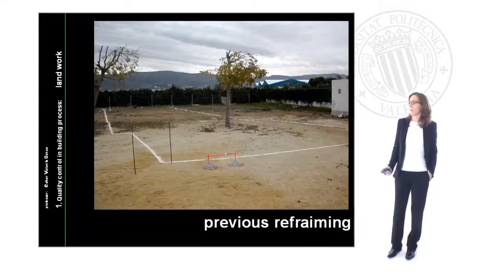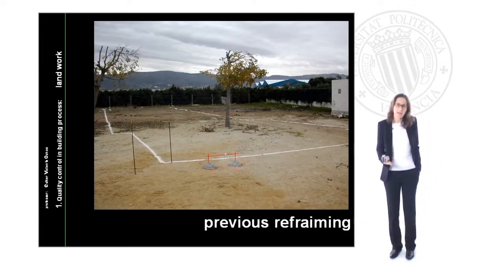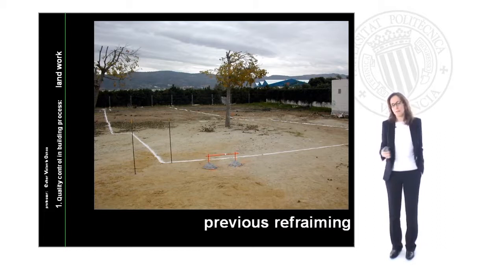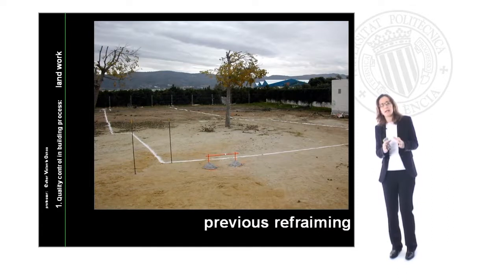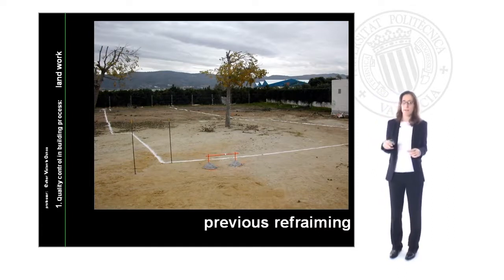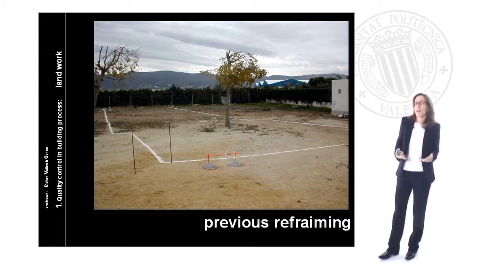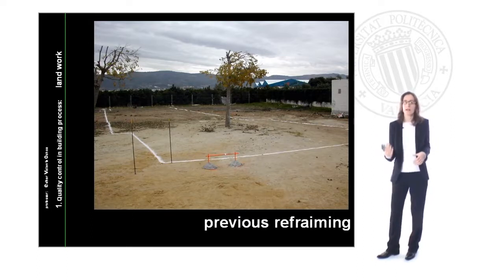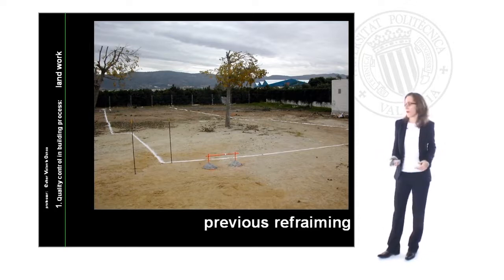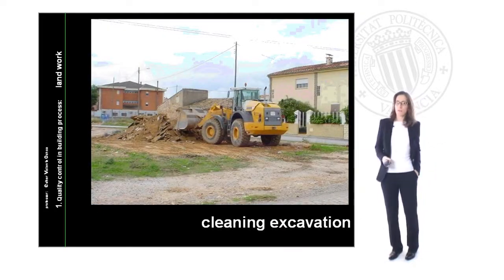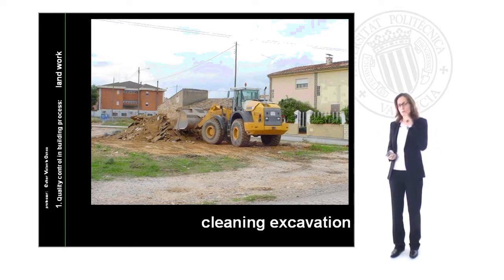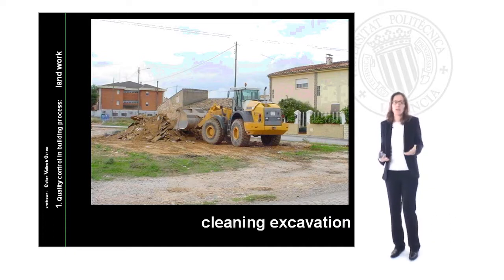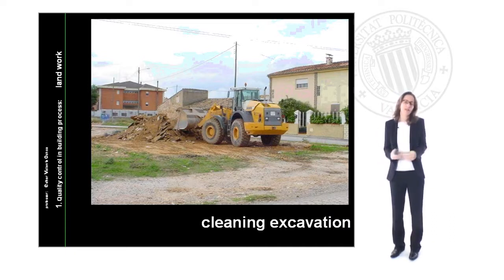The first activity we have to do is a previous reframing — a previous perimeter mark on the parcel. It is a perimeter mark for the building we are going to construct; it does not need to cover all the surface, just the building perimeter. If our parcel is larger than the building footprint, we will use the surrounding area for rubbish and land work. After this previous reframing, we will make a cleaning excavation — a superficial cleaning of about 10 cm that gives us enough information and removes the surface layer of land to help with the next reframing.